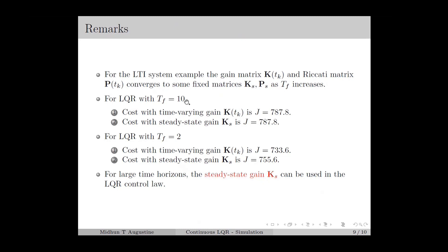For time horizon tf equal to 10, the total cost J for the LQR with the optimal gain k(tk) and for the LQR with the fixed steady-state gain ks gives the same value. For time horizon tf equal to 2, the cost for LQR with the optimal gain k(tk) is lower, whereas the cost for LQR with the steady-state gain ks is higher. The cost increases because the optimal gain was time-varying for the entire time horizon, so replacing it with a fixed gain affects performance.